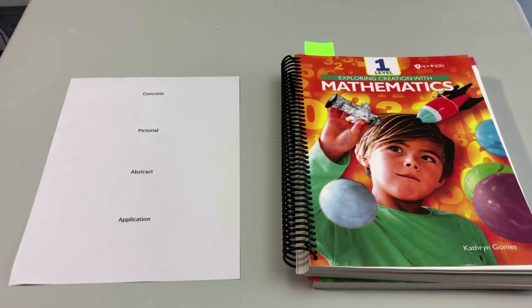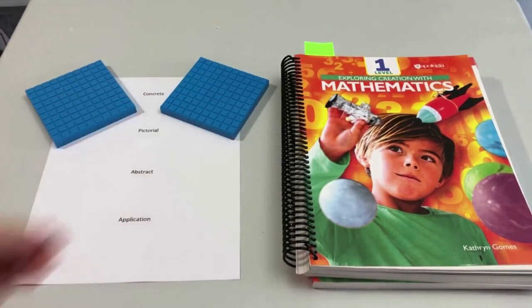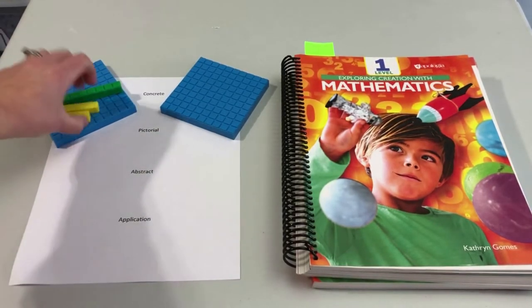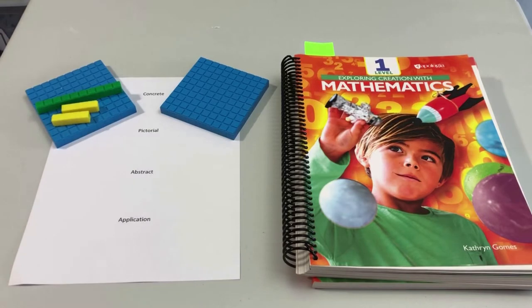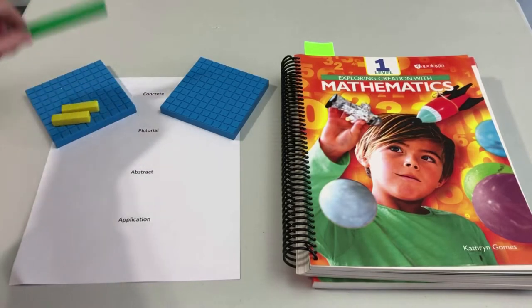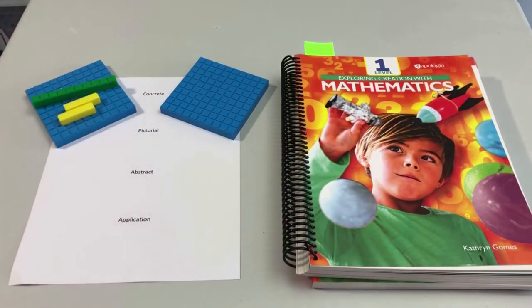When we first show a mathematical idea to students, say place value in three-digit numbers, you want to start concretely. Base-10 blocks are one of my favorite ways to concretely show large numbers. You might have your child build the number 218. They can actually see this is 100, 200, this is a 10, and then eight ones. They can touch it, they can feel it.